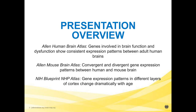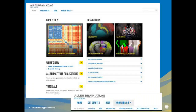The first topic will be in humans, where we found that genes involved in brain function and dysfunction tend to show consistent expression patterns between adult human brains. The second topic will involve the mouse brain atlas, where we're looking at convergent and divergent gene expression patterns between the human and the mouse brain. The third part will be looking at the NIH Blueprint Non-Human Primate Atlas, where we find that gene expression patterns at different layers of cortex change dramatically with age. This is the main portal for the Allen Brain Atlas.